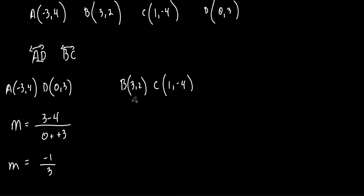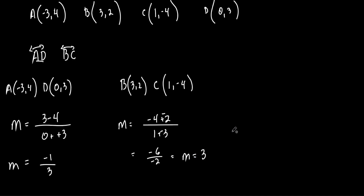Now find the slope of line BC: y₂ − y₁ over x₂ − x₁ = (−4 − 2) over (1 − 3) = −6 over −2 = positive 3. The slope of BC is positive 3. Slope of AD is negative one-third; slope of BC is positive 3. Positive 3 is the negative reciprocal of negative one-third, so the two lines are perpendicular.